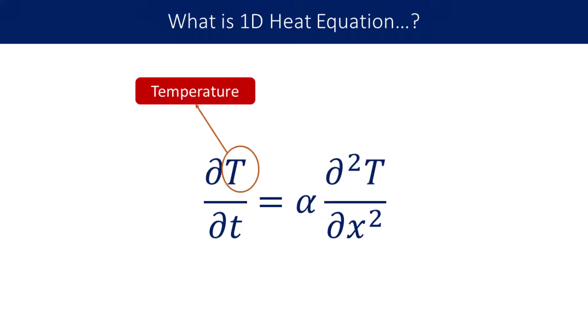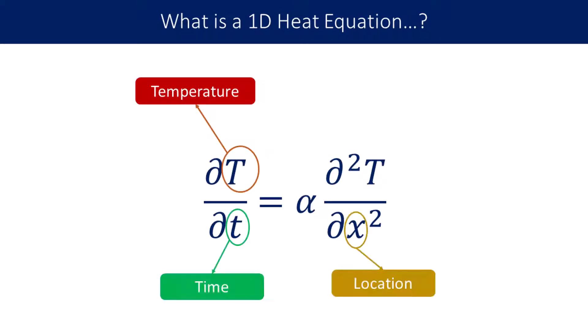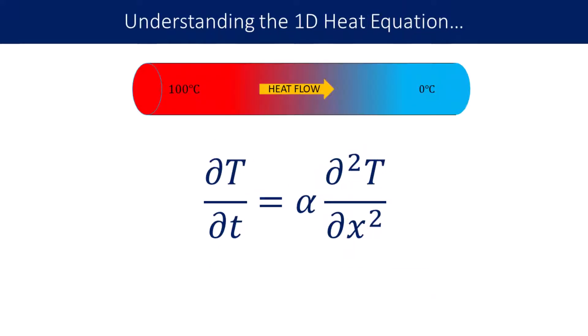What is this equation? It is the relation between the time derivative of temperature and the gradient of temperature at any given point and at any given instant of time. Here, alpha is a constant of proportionality and it is called thermal diffusivity. It remains constant for most metals over a wide range of conditions.